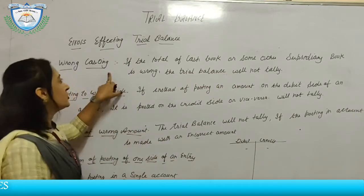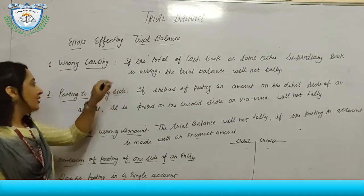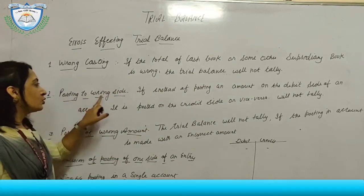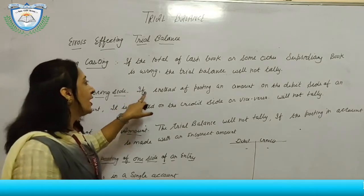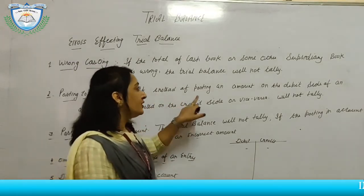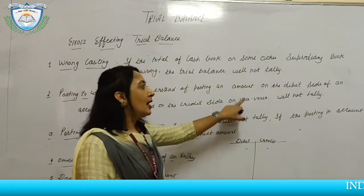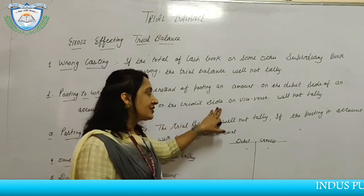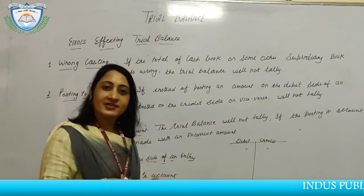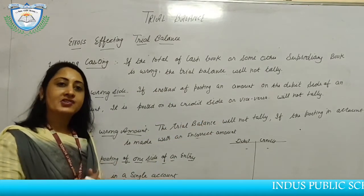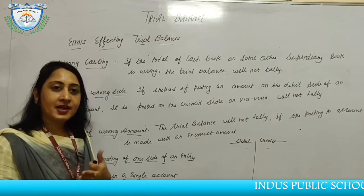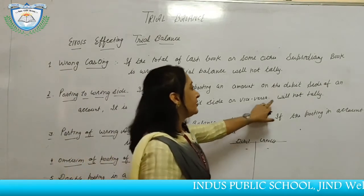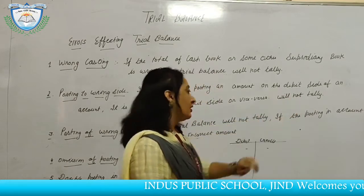The first error which will affect the trial balance is posting to the wrong side. If instead of posting an amount to the debit side, it is posted to the credit side or vice versa — debit की जगह credit कर दिया, credit की जगह debit कर दिया — then the trial balance will not tally.